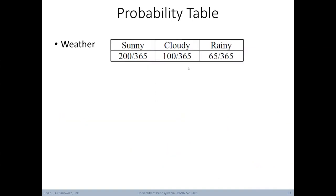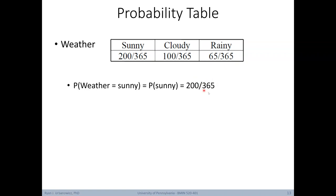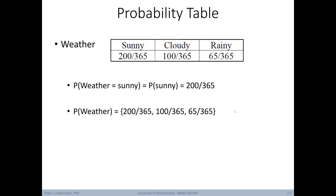Now let's look at probability tables. Here we have an example of weather at different days in the year — 200 of which were sunny, 100 cloudy, and 65 rainy. So we can quantify what is the probability that the weather is sunny: we have 200 sunny days out of 365. We can use similar notation to represent the probability of all different kinds of weather, listed individually. At this point, we're just looking at the probability of a single outcome — in this case, what is the weather?